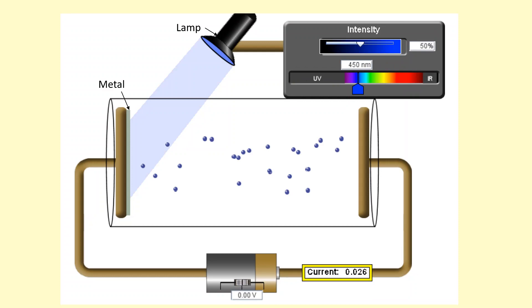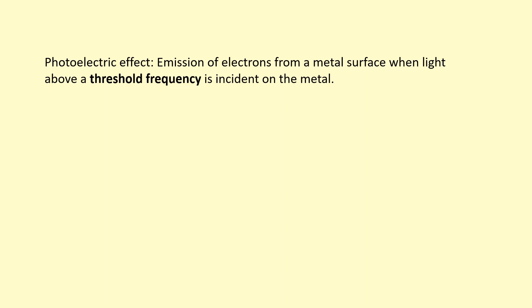Eventually we get to a point, for example in this case like blue light here, where you've got electrons being emitted from the metal surface. This phenomena is known as the photoelectric effect: emission of electrons from a metal surface when light above a threshold frequency is incident on the metal. So the light needs to be higher than a minimum frequency before you can see the electrons being emitted.